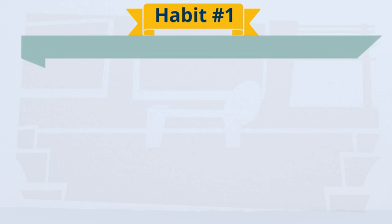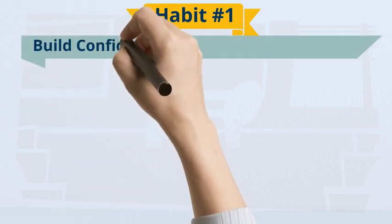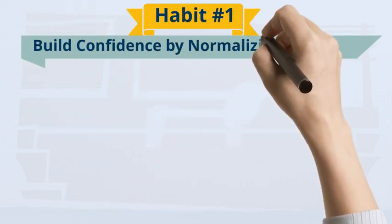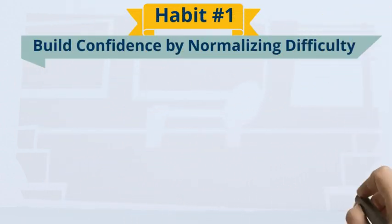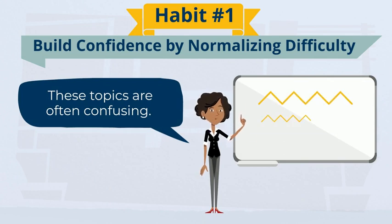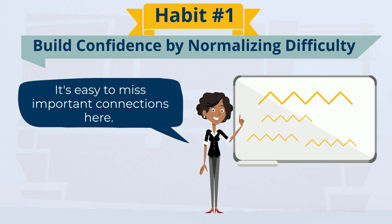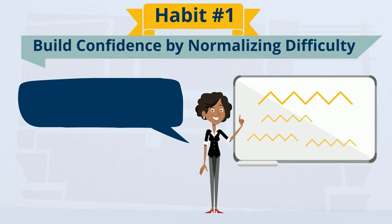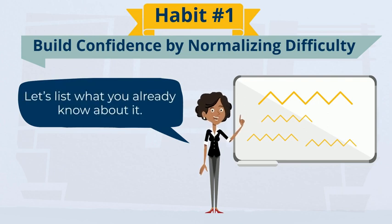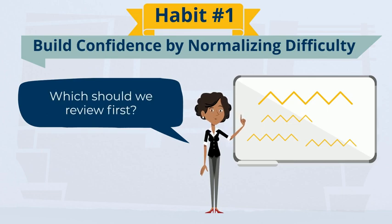Habit number one: build students' confidence by normalizing difficulty in the learning process. This makes students more willing to participate because they know others share their confusion. Student responses to difficulty also helps instructors choose follow-up activities based on the student responses.